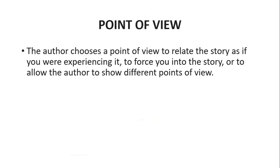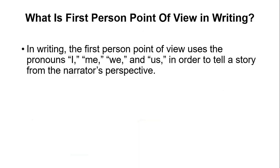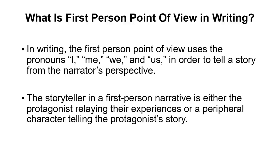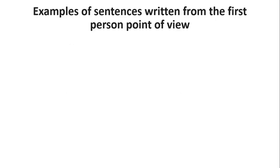The author chooses a point of view to relate the story as if you were experiencing it, to draw you into the story, or to show different perspectives. First person point of view uses the pronouns I, me, we, and us to tell a story from the narrator's perspective — most commonly called narrative writing. The storyteller in a first person narrative is either the protagonist relaying their own experiences or a peripheral character telling the protagonist's story. For first person, focus on: I, me, my, we, ourselves, us, etc.